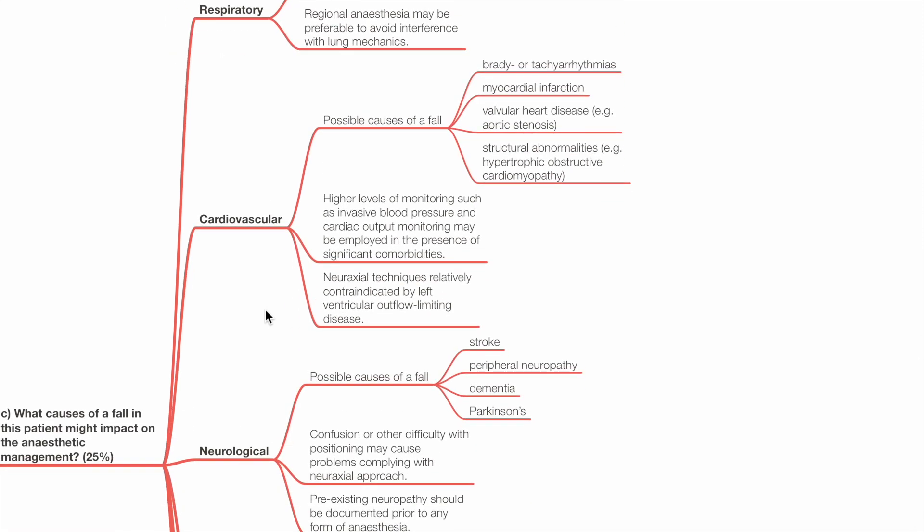CVS causes include brady or tachyarrhythmias, myocardial infarction, valvular heart disease such as aortic stenosis, structural abnormalities such as HOCM. Higher levels of monitoring such as invasive BP and cardiac output monitoring may be employed in the presence of significant comorbidities.